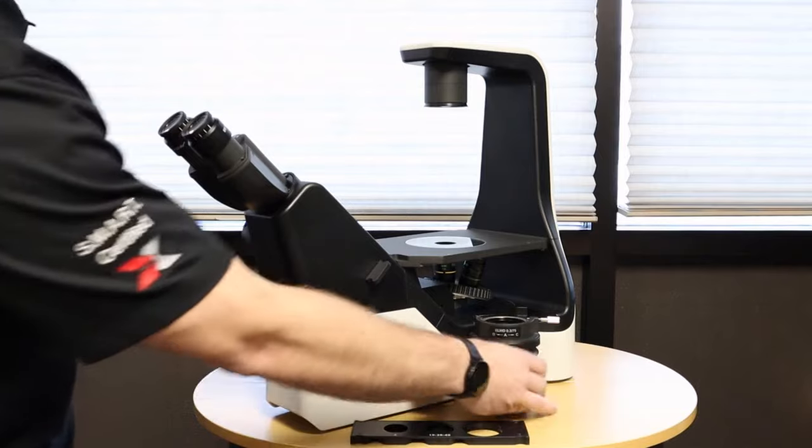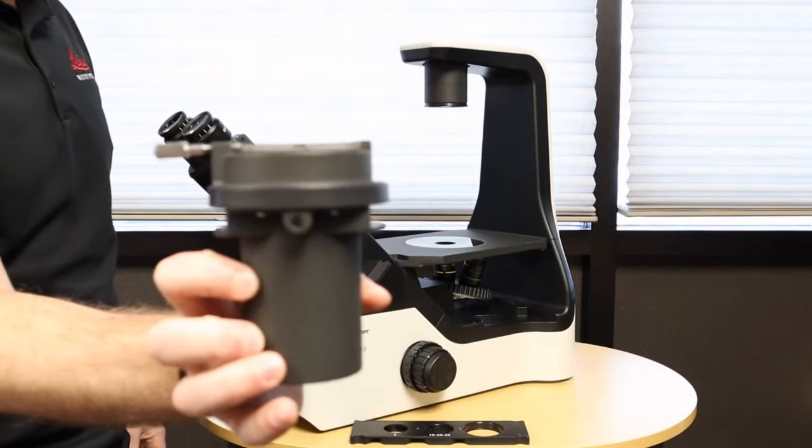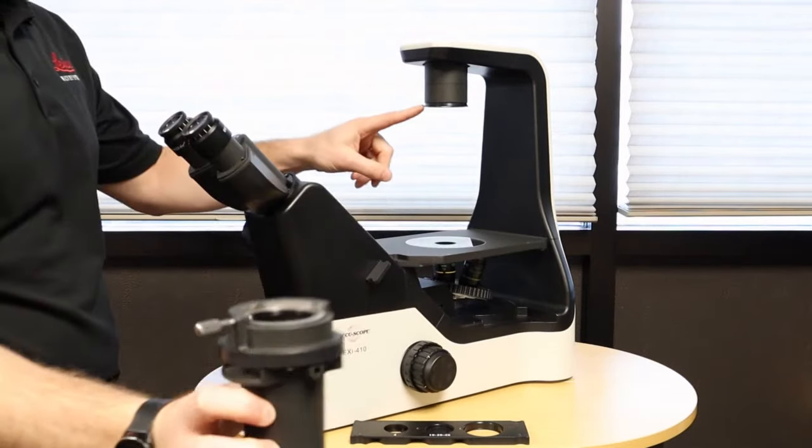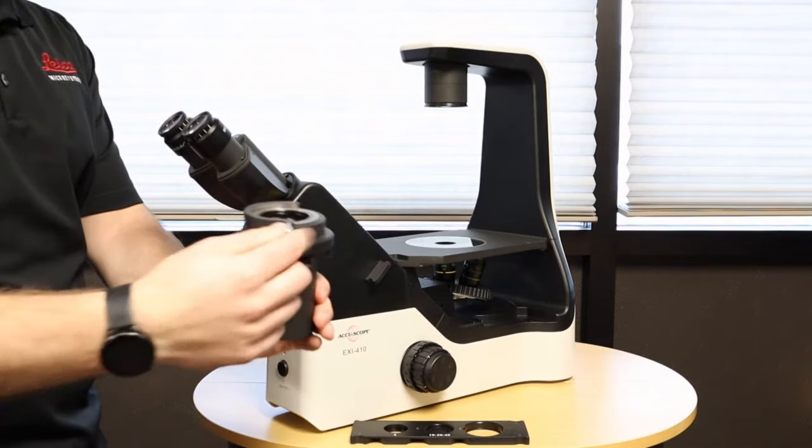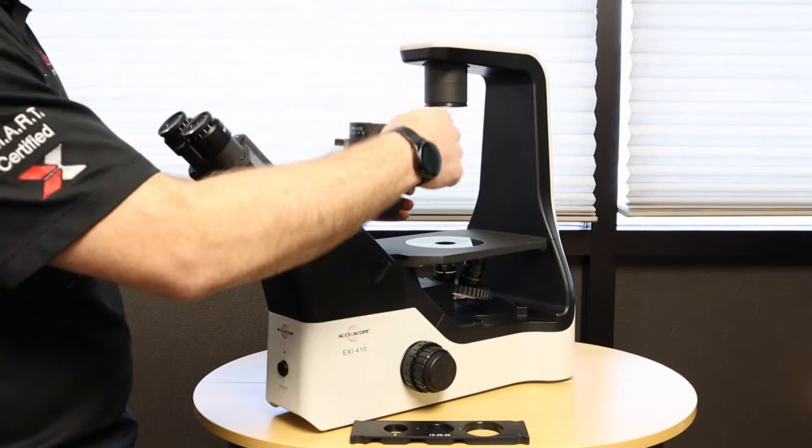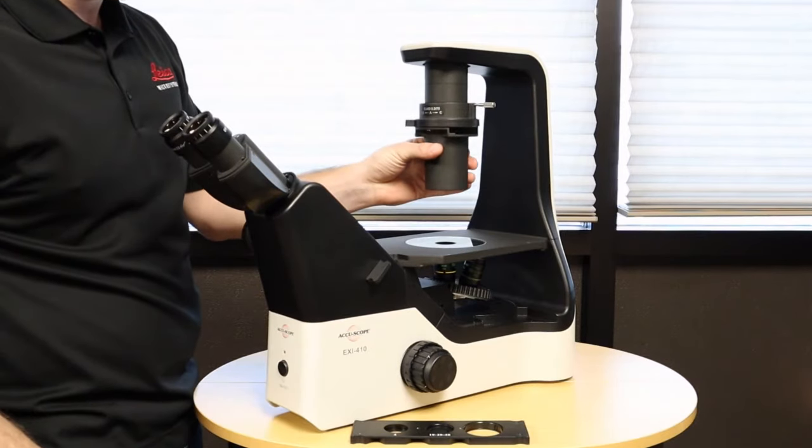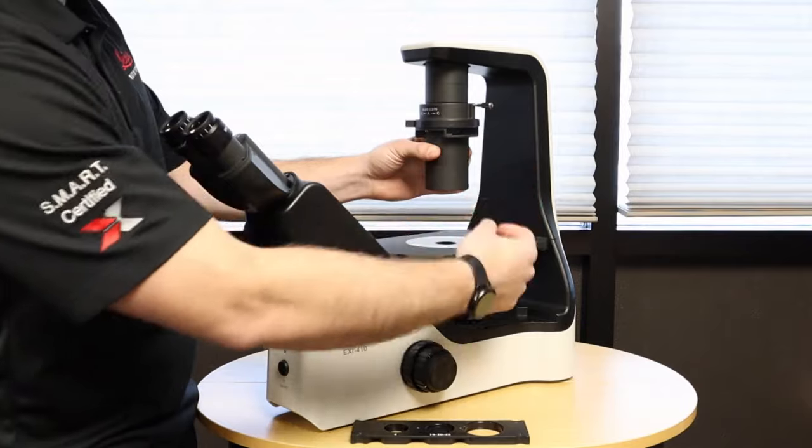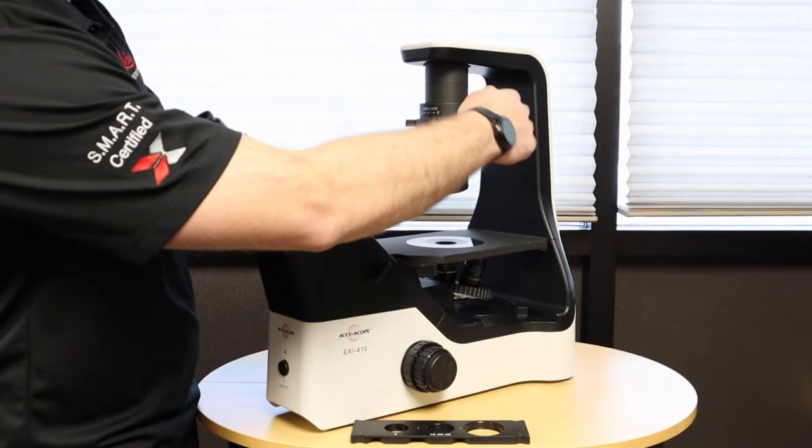The next part is going to be what is called the condenser. The condenser, as you can see, slides onto the flange mount here and locks with this thumb screw. So we simply loosen the screw, slide it onto the flange, straighten it, and then simply tighten the thumb screw.